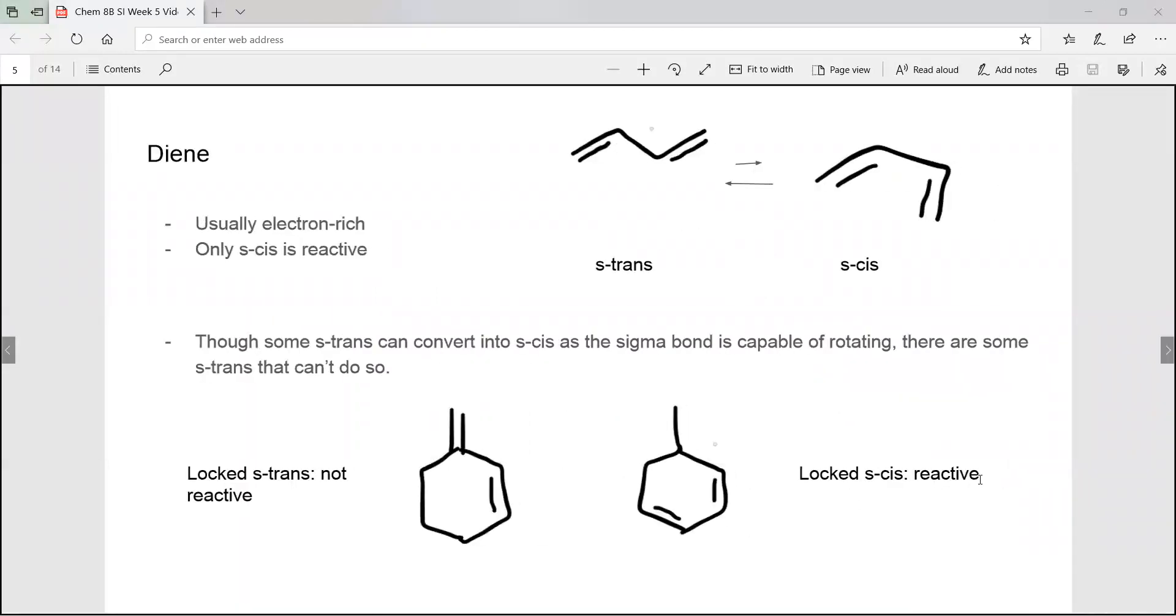Diene is usually electron rich and only S-cis diene is reactive. Normally S-trans and S-cis can convert into one another because the sigma bond between the double bonds are capable of rotating. But some S-trans can't convert into S-cis because they're in a ring. Those are called locked S-trans and they're not reactive. Locked S-cis dienes tend to be pretty reactive.